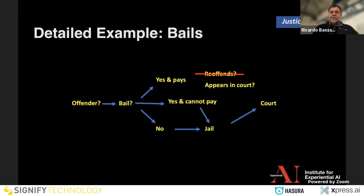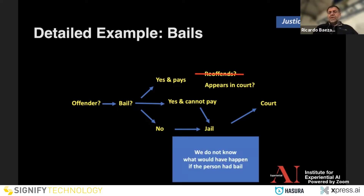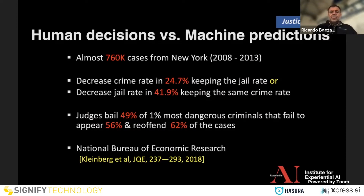If the person gets bail and can pay, good. If they cannot pay, there are people who loan money, and they have to make the same prediction as the judge: will this person appear in court and return the money? If you don't get bail, you go to prison. One problem is we don't know what would have happened if the person had been bailed, so we have half the data and need to do data imputation. The results are interesting: assuming the prediction is correct, they were able to decrease the crime rate by 25% or decrease the prison rate by 42% — much better than the judges. Even for the 1% most dangerous criminals, judges were making big mistakes.